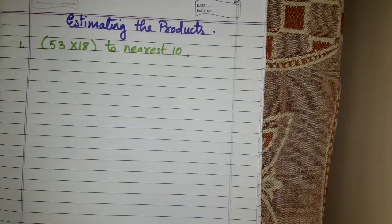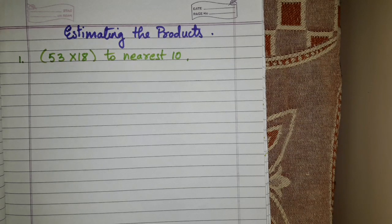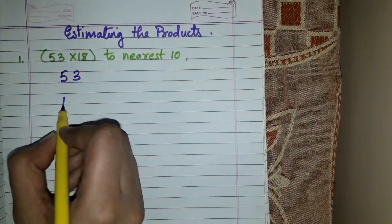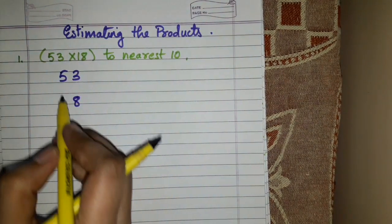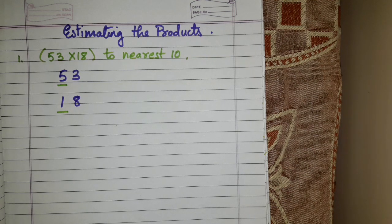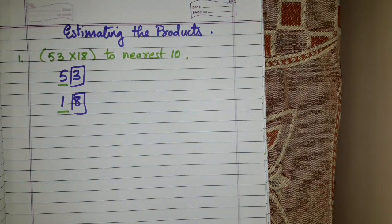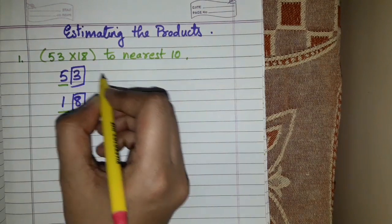Suppose this is my first case: 53 into 18, and we have to round off the numbers nearest to 10. As I told you in my previous video, we will follow the same method. We will take the numbers individually and round them off to nearest 10. We know 5 and 1 both belong to the tens place, so we will look at the digit on the right-hand side — 3 and 8. Now, 3 is less than 5, so it will become 0.